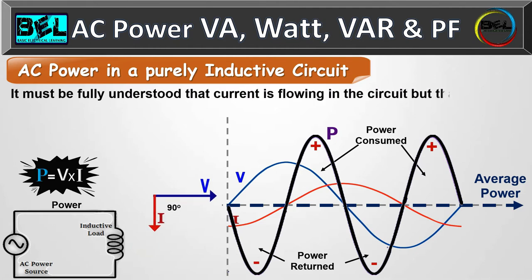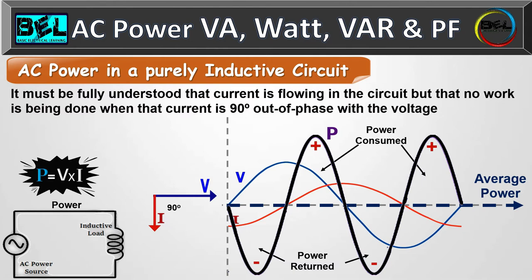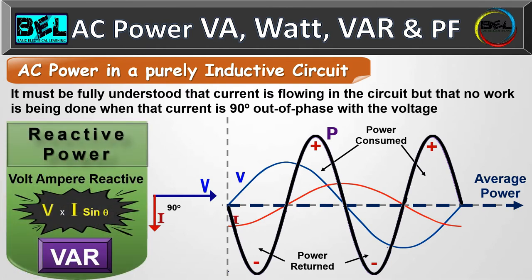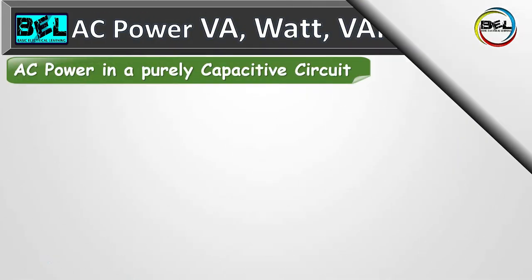It must be fully understood that current is flowing in the circuit but no work is being done when the current and voltage are 90 degrees out of phase. In reactive power, the formula is V·I·sin theta. The power which has no work done is called reactive power — or the power which is returned back to the system. Real power is consumed power which actually does work; reactive power is returned power.